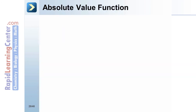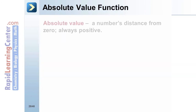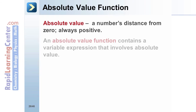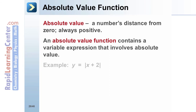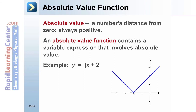Absolute Value Function: Absolute value is a number's distance from zero. Absolute value is always positive. An absolute value function contains a variable expression that involves absolute value. An example would be y equals the absolute value of (x plus 2).